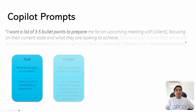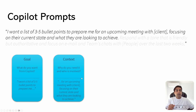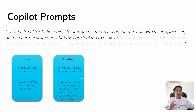The second part is the context — why do you need it and who is involved. So here, we are saying 'for an upcoming meeting with a client, focusing on their current state and what they are looking to achieve.' So this is the context, the second part.